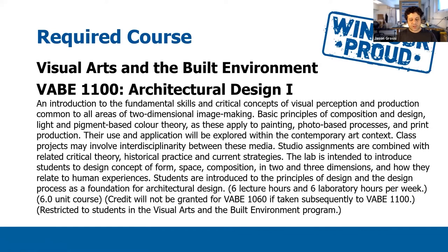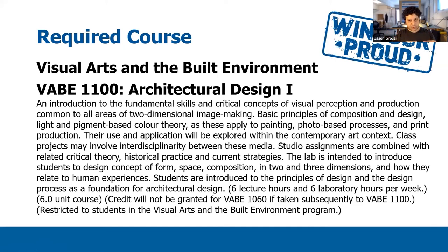The second class is your key core architecture class, Architecture Design One, course code VABE 1100. It's actually two courses together — once you register for VABE 1100, you'll automatically be put into both. It's an architecture studio and a visual arts studio that are combined. It's a double-weighted class, meaning it's six credits rather than three. The other classes you need to sign up for are all three credits.